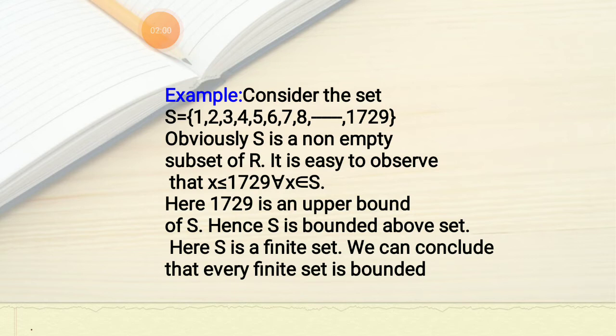S is a non-empty subset of R because it contains 1729 elements. It is easy to observe that every element of S is less than or equal to 1729. So by the definition of upper bound, 1729 is an upper bound of S. Hence, because S has an upper bound, S is a bounded above set. Since S is a finite set, we can conclude that every finite set is bounded.